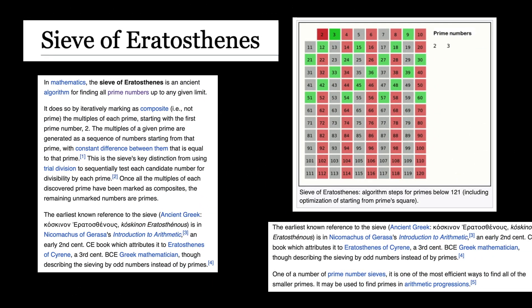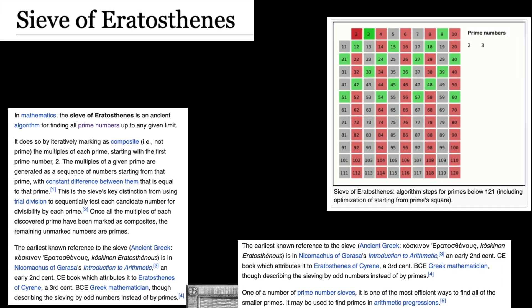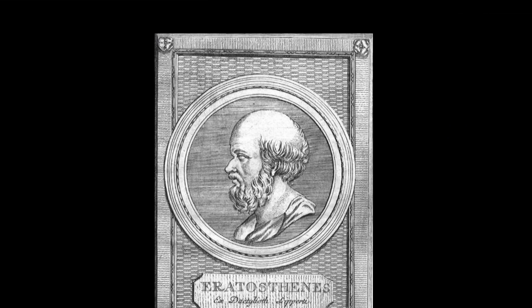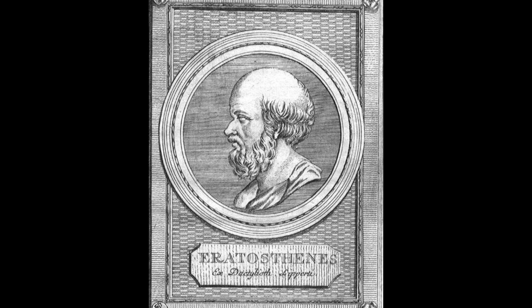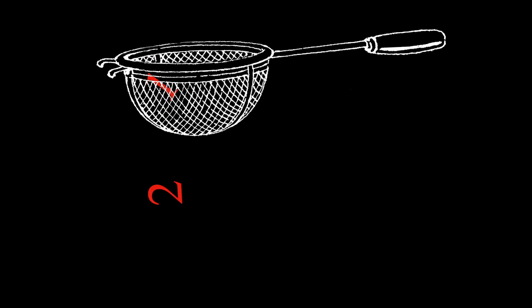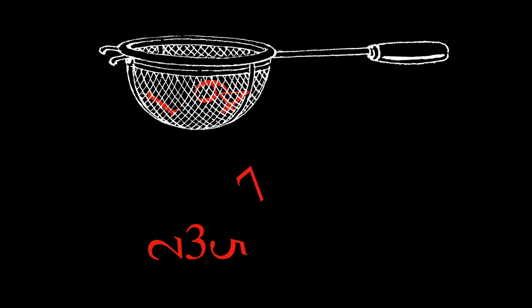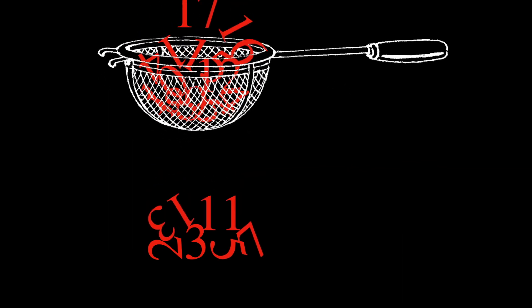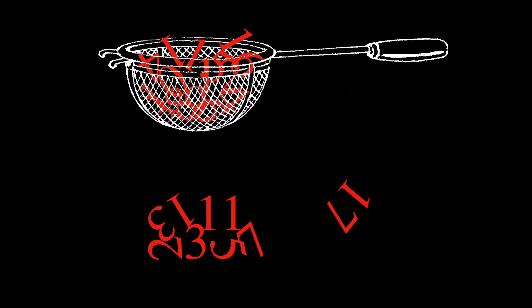A sieve is a method or algorithm for finding or filtering out certain numbers, usually prime numbers. The Sieve of Eratosthenes is one of the most famous ones, named after the ancient Greek mathematician Eratosthenes of Cyrene, who lived in the 3rd century BC. This sieve is one of the most efficient ways to find small prime numbers, and is a simple yet profound demonstration of number sieving techniques.